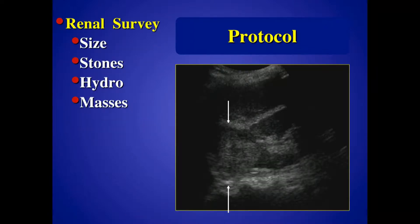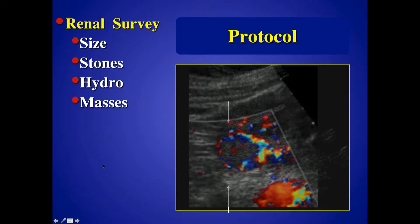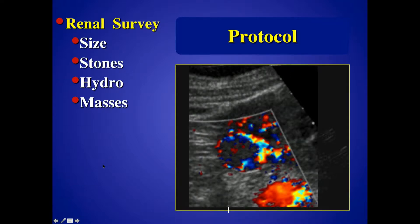Looking at the kidney first — look for evidence of atrophy, scarring, hydronephrosis, stones, and masses. Here's a patient with a large mass incidentally picked up from the upper pole of the right kidney. I put the color on, see tumor vascularity within it, and if it has high velocity flow I get concerned it's renal cell carcinoma — as was the case here. Incidentally picked up.